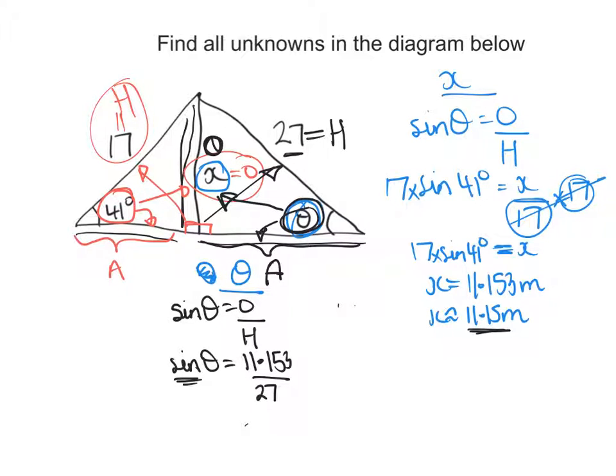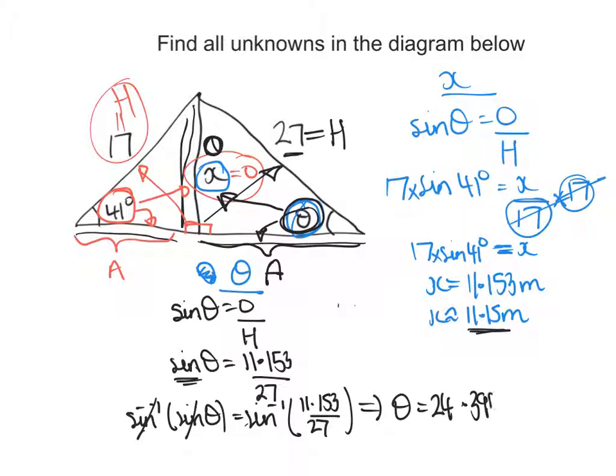Now I need to get rid of this sine theta. The opposite of a sine theta is an inverse sine. And if I do that to both sides, I keep the equation balanced. I get rid of my sine theta because that will cancel out. And just leave theta equals inverse sine of 11.153 divided by 27. I worked out to be 24.398. Now if I round that, I get 24.40. Alright, let's try the next one.